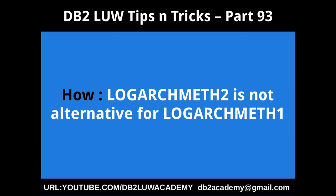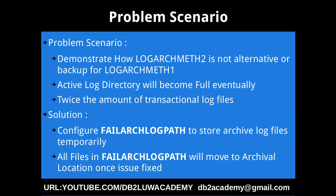This slide talks about the problem scenario and solution. We want to demonstrate how logarchmeth2, which is the secondary log archival path or method, is actually not an alternative or backup for logarchmeth1. There are two archival log mechanisms available as configuration parameters, and it is not the case that if logarchmeth1 fails, we can configure logarchmeth2 to fix it. That is not the intent.